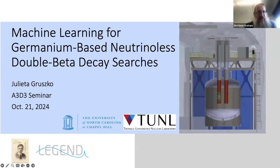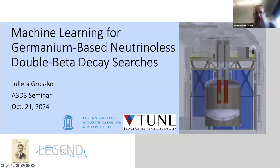Welcome to October's A3D3 seminar. I'm very pleased to introduce our speaker today, Dr. Julietta Grusko. Julietta is an assistant professor at UNC Chapel Hill. She got her B.S. in physics and B.A. in mathematics from the University of Rochester, her Ph.D. from the University of Washington, and was a Pappalardo fellow at MIT before joining UNC in January 2020. She'll be talking about machine learning for germanium-based neutrino-less double-beta decay searches.